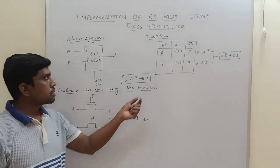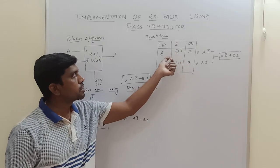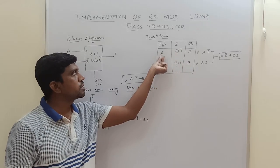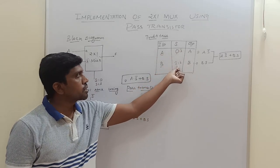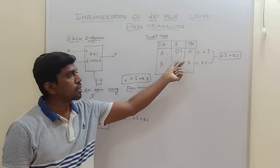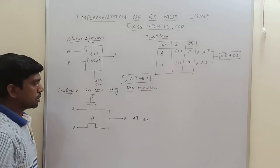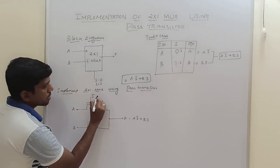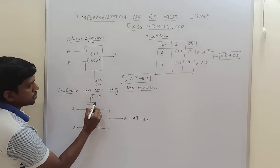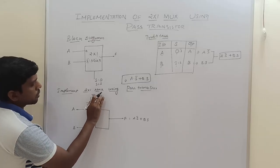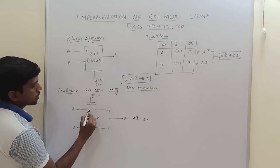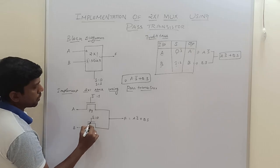So I just substitute the value for the selection line. When S equals 0, you will get input A connected to the output. When S equals 1, input B is connected to the output. Just to verify the truth table with the diagram: when S equals 0, S̄ equals 1. So 1 means this PMOS transistor 1 is turned on, PMOS transistor 2 is turned off. So this A value is transferred to output F.